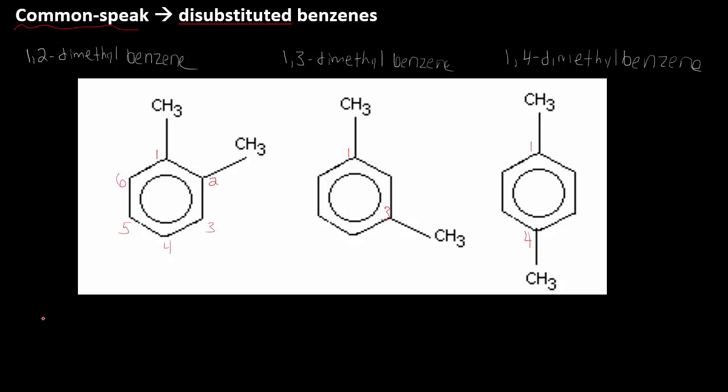Now, what I mean by common speak is oftentimes a 1,2 substitution like this on a benzene ring is referred to as ortho. So this would be ortho-dimethylbenzene. 1,3 is meta, so meta-dimethylbenzene.